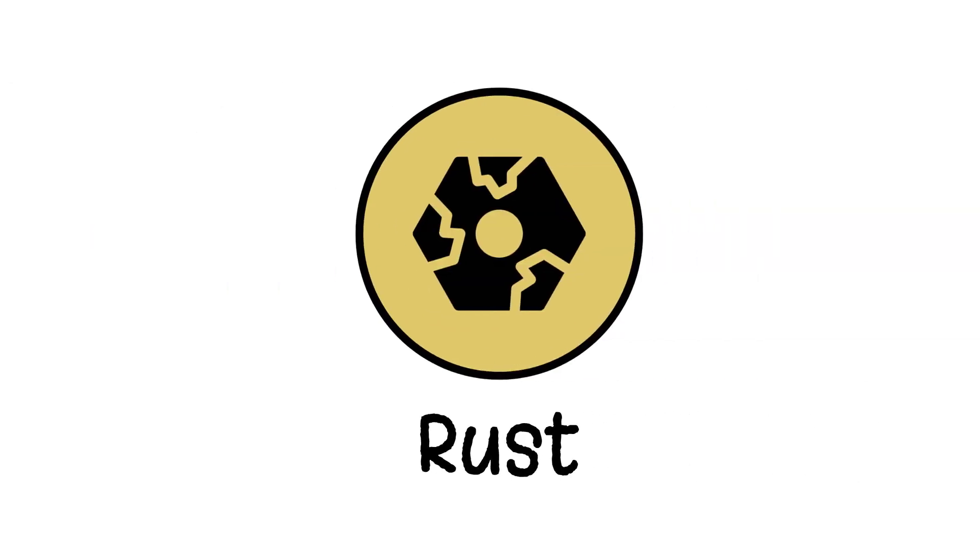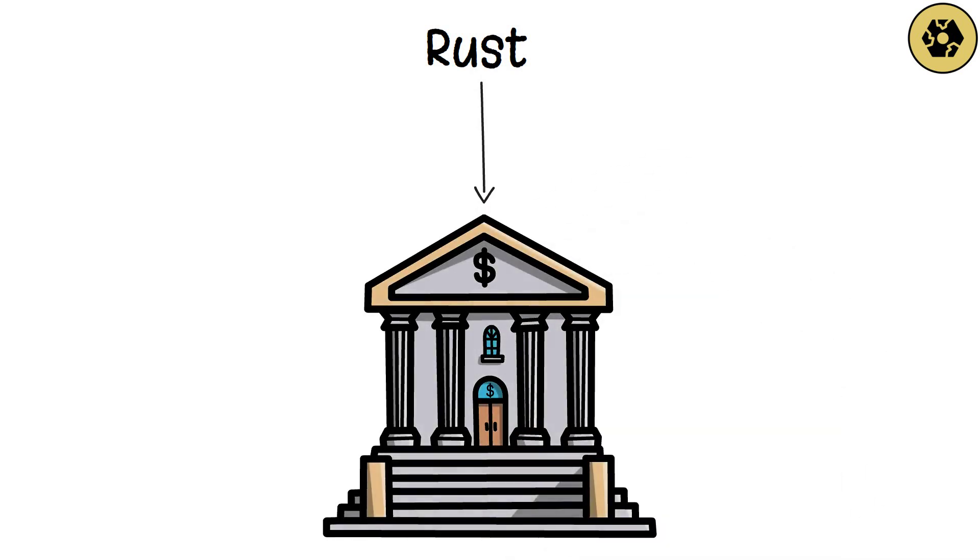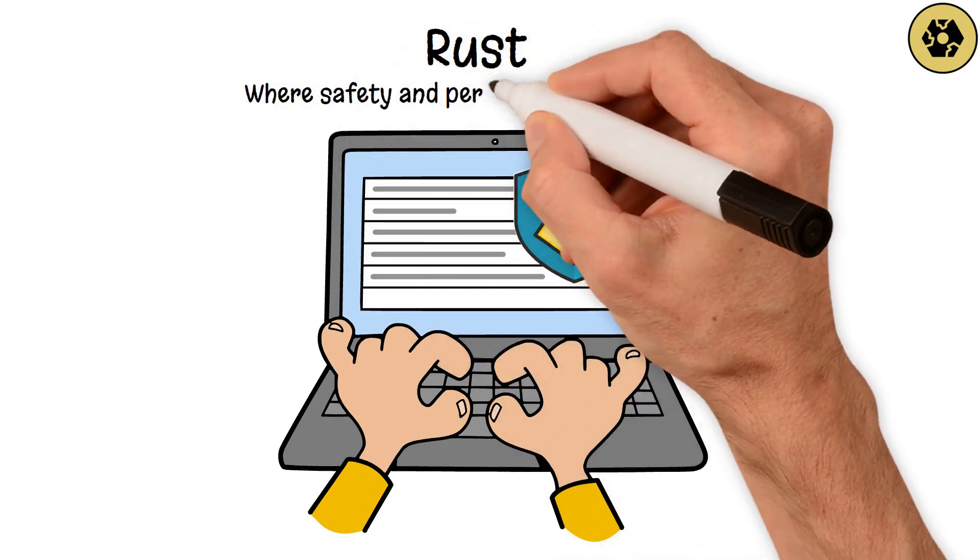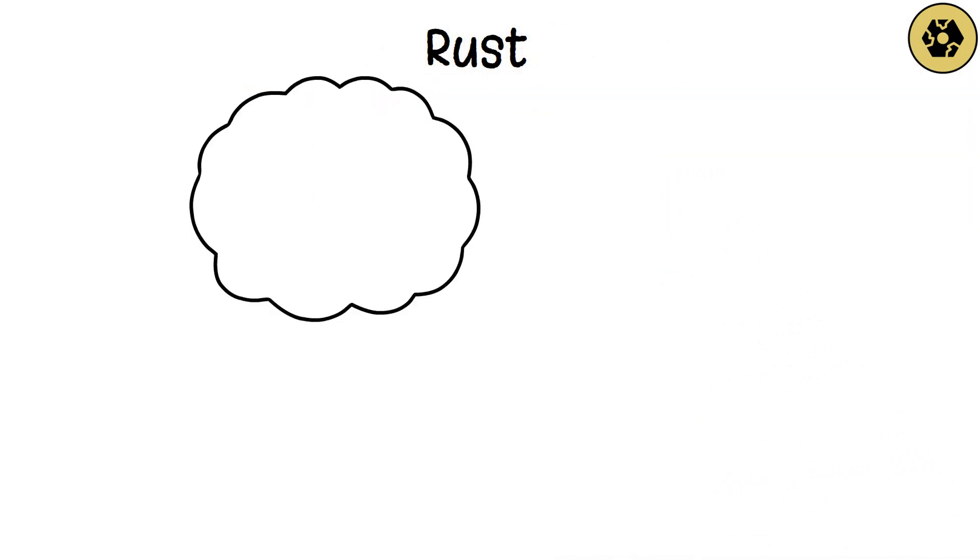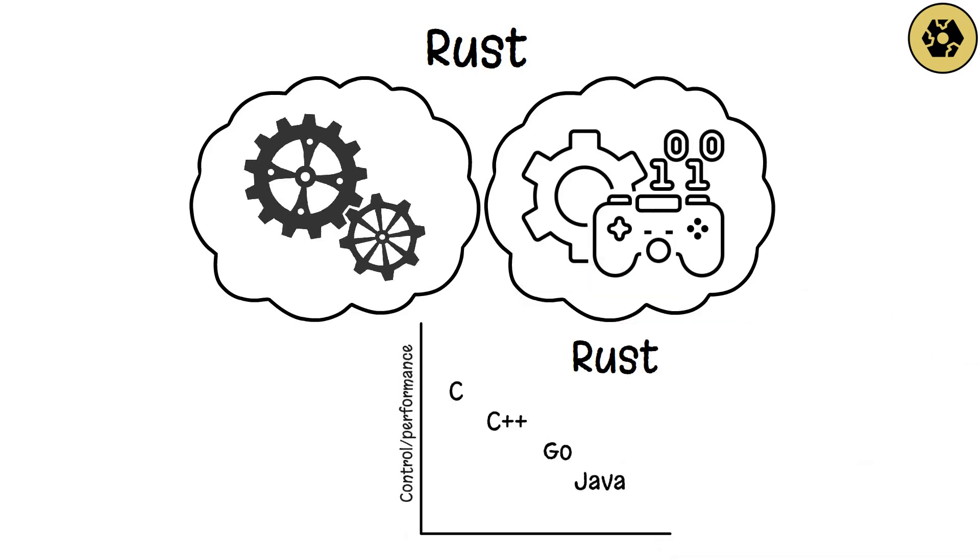Rust. Think of Rust as a fortified bank vault. It's designed to be ultra-secure and reliable, making it excellent for software where safety and performance are critical, like operating systems and game engines. Rust ensures that the software you build conserves resources and performs optimally.